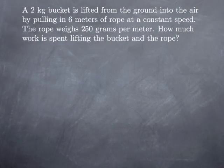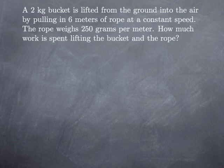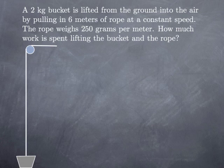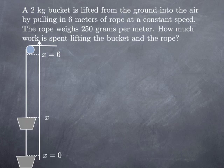Now let's take a look at an example where we need to use this integral formula. A 2 kg bucket is lifted from the ground into the air by pulling in 6 meters of rope at a constant speed. The rope weighs 250 grams per meter, and we want to know how much work is spent lifting the bucket and the rope. To locate the position, we're going to say that we are at level x equals 0 when the bucket is on the ground, and x equals 6 when it is all the way up.